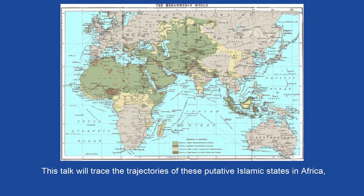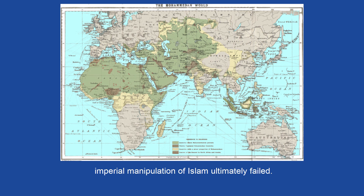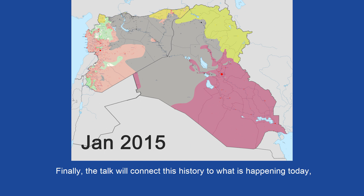This talk will trace the trajectories of these putative Islamic states in Africa, the Middle East and Asia, and explain how this British imperial manipulation of Islam ultimately failed.